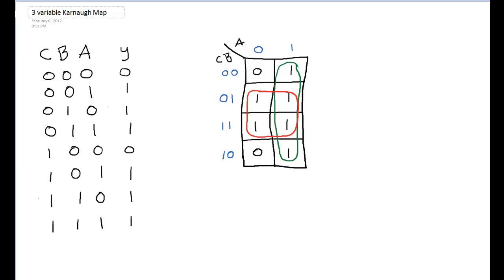Now all my 1s are covered, my groups are in powers of 2, which is 1, 2, 4, 8, 16, and so on. And all my 1s are covered, I haven't put any 0s in the loop, so so far I'm good. I can't make any groups bigger than this, so I know I'm okay here.